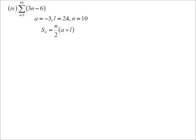Sigma notation. So sum of, there's the general formula, 3N minus 6. We're going from the first term to the 10th term. So I'm going to use the A plus L formula. So the first term is negative 3 when I substitute 1 into the formula. The last term will be 24, and we've got 10 terms all up. So N on 2, A plus L, and there it is, 105. 105 for that one.